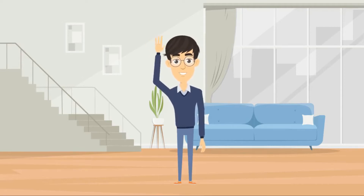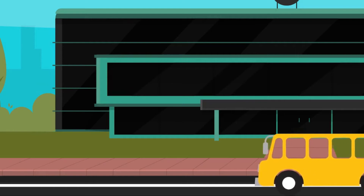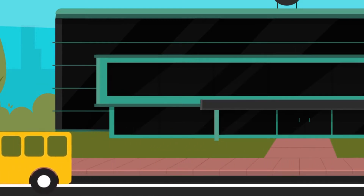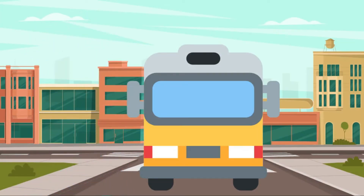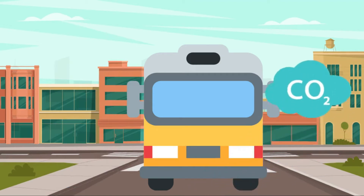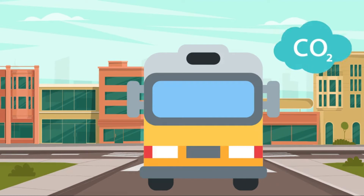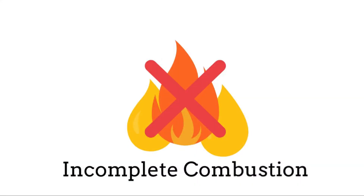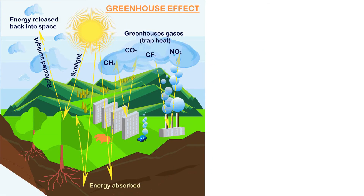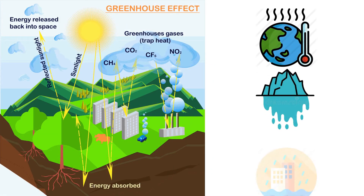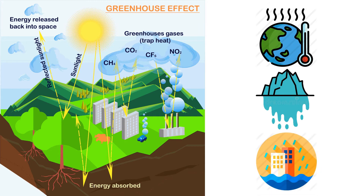Amer is riding a bus to his workplace, which is 10km from his house. Little does he know, the bus he rides emits greenhouse gases like nitrogen oxide, carbon dioxide, and carbon monoxide. This is because the incomplete combustion of fossil fuels like diesel releases carbon dioxide to the atmosphere, causing global warming and melting ice caps that lead to rising sea levels and flooding.